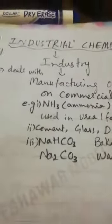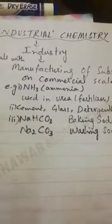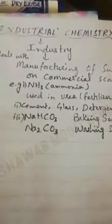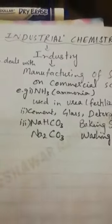The word 'industrial' is taken from the word 'industry.' In the industry, a variety of substances are made on a large scale, which is also called commercial scale, because they have wide applications in our daily routine. For example, fertilizers, different types of sodas, soaps, medicines, glass, and cement are made in the industry on a daily basis.